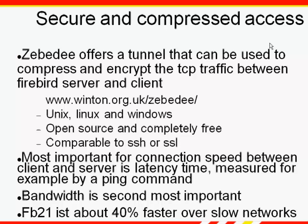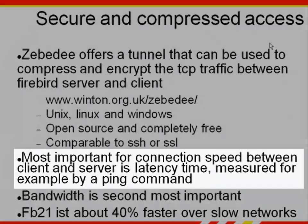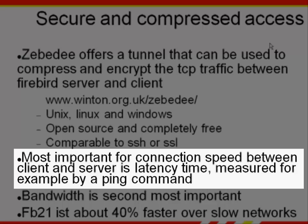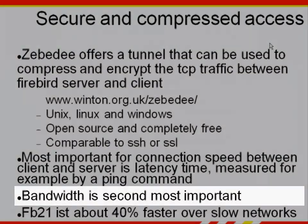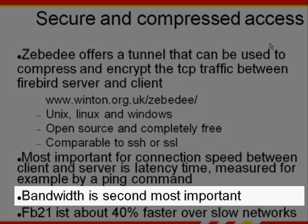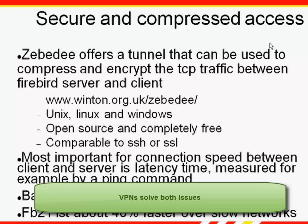Compression reduces the file size, which increases speed. However, the big issue for connection speed is latency, which can be measured, for example, by pinging the server. Latency is a more critical factor than bandwidth. Many people set up VPNs through to their service, which solves both issues. The VPN does the compression for you and provides you with a secure tunnel.